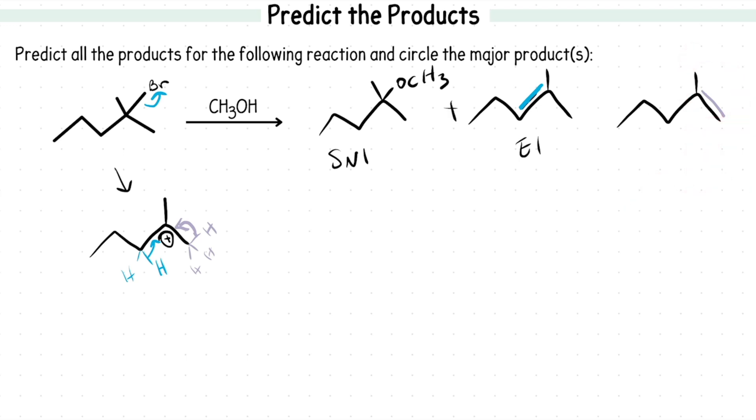So there are only these products. Looking at the E1 products, which one would be the major. This has one, two, and three substituents versus this one has one and two. The one that has more substituents wins. So this is the major, and this is the minor.